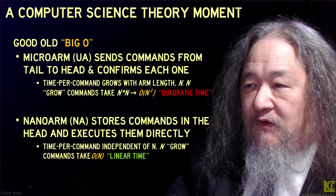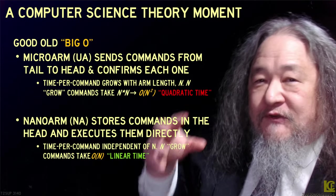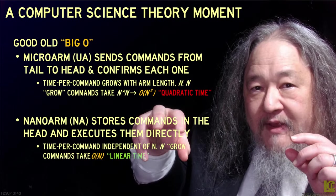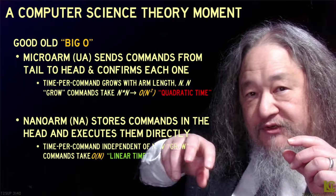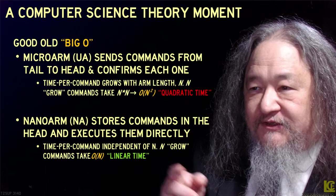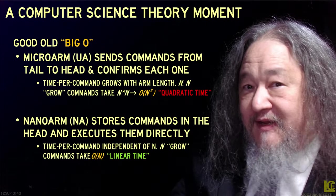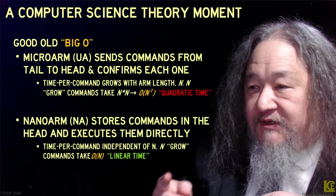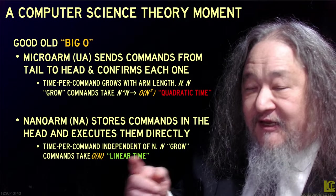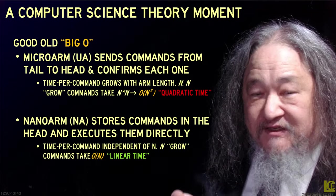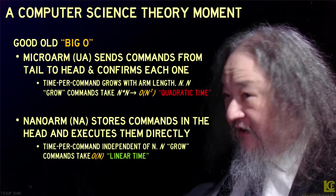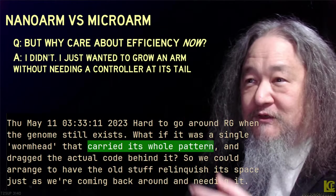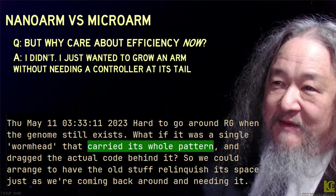The new one, the nano-arm, NA, stores the program in the head of the arm and executes it directly from the head. So the time per command doesn't change depending on how long the arm is, so it takes linear time. It's a perfect example of efficiency: linear time versus quadratic time.